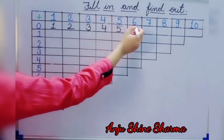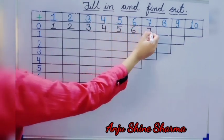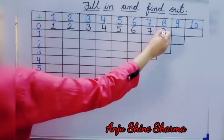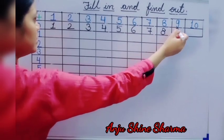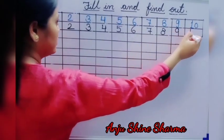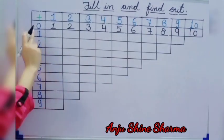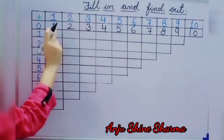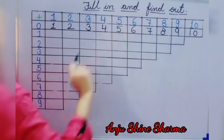Then 0 plus 6 is 6. Then 0 plus 7 is 7. And 0 plus 8 is 8. And 0 plus 9 is 9. And 0 plus 10 is equal to 10. So when we add 0 with all of these numbers from 1 to 10, we get 1, 2, 3, 4, 5, 6, 7, 8, 9 and 10.